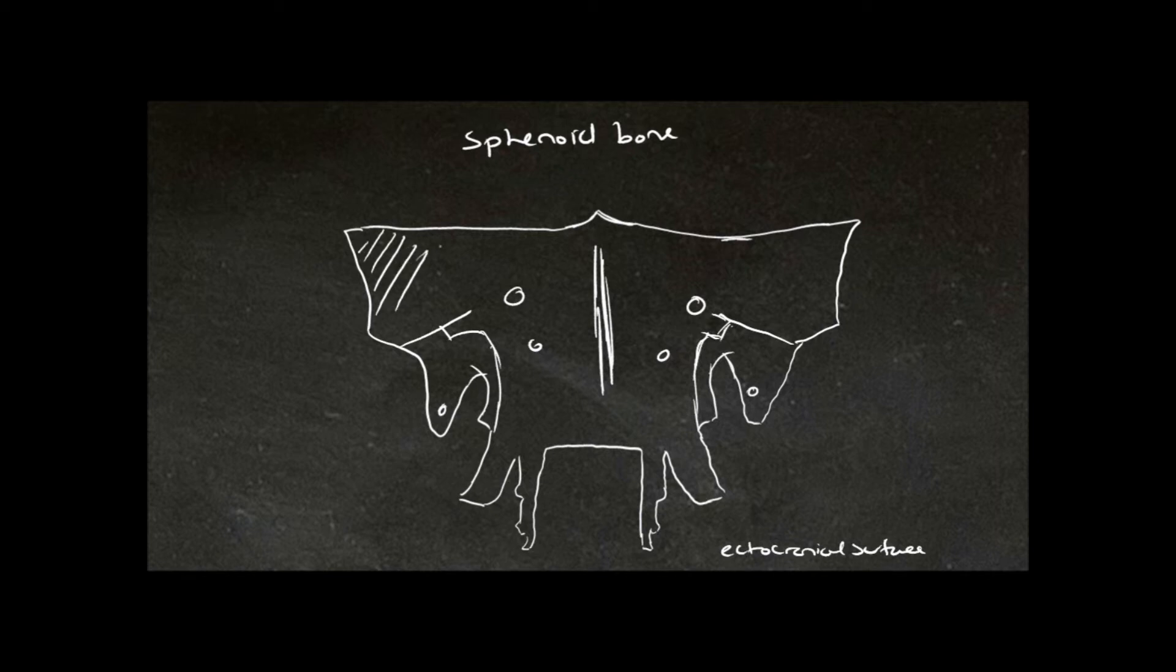Here and here is what is referred to as the greater wing of the sphenoid. And located on the greater wing of the sphenoid is the orbital plate. We also have the sphenoidal crest in the midline.